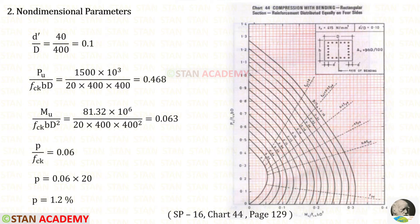Now we are going to find the non-dimensional parameters. Let us find d prime upon D. We will get 0.1. Let us open SP 16 chart number 44. I have selected this chart because our FY is 415. D prime upon D is 0.1 and I am going to distribute the reinforcement equally on the four sides.